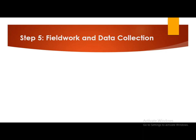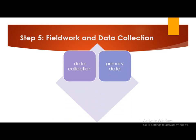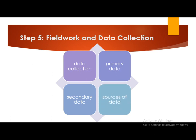Step number five is field work and actual data collection. Data related to the research is collected in this step. If the data is collected for the first time, it is called primary data. When already collected data is used by the researcher, it is called secondary data. Interviews, observations, surveys, questionnaires, and schedules are sources of primary data. Sources of secondary data include reports, journals, and other publications like reference books.